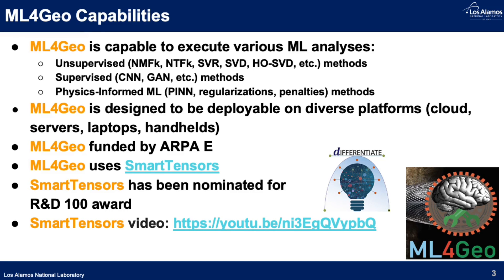ML for Geo is capable of performing unsupervised, supervised, and physics-informed machine learning analysis. It can be deployed on different platforms. The work is funded by ARPA-E. ML for Geo uses our Smart Tensors framework, which has recently been nominated for an R&D 100 Award.